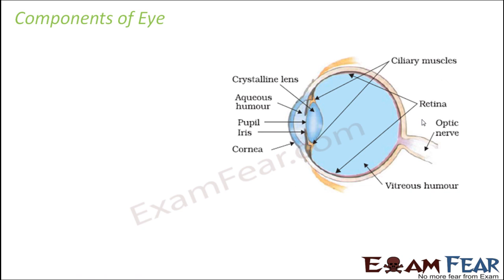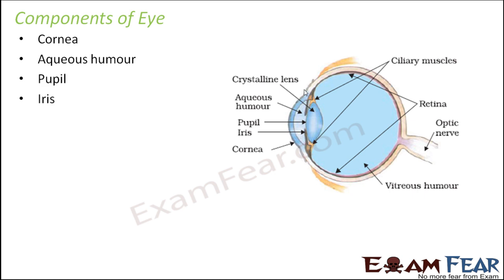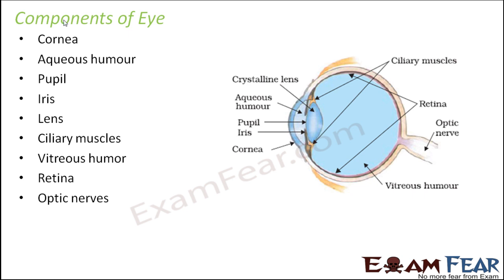Let us quickly look at the various components of the eye. This is a side view of a human eye. The different parts are: cornea, aqueous humor, pupil, iris, lens, ciliary muscles, vitreous humor, retina, and optic nerves. These are the important components of the eye, and here in this picture you can already see them labeled. We will spend time understanding each of them.